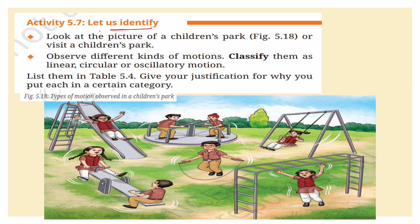Let us identify. Look at the picture of a children's park and observe different kinds of motions. Classify them as linear, circular, or oscillatory motion and list them in table 5.4, giving your justification for each category. A picture of a children's park is given showing a seesaw, merry-go-round, swing, and slide.